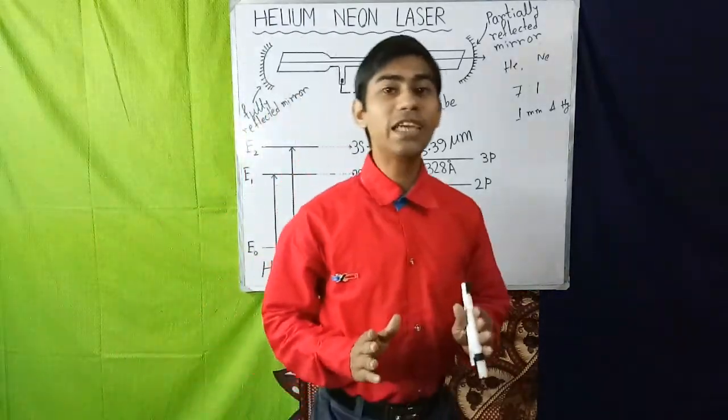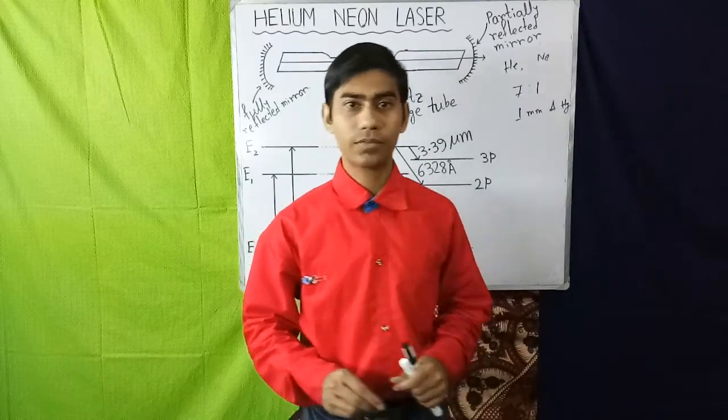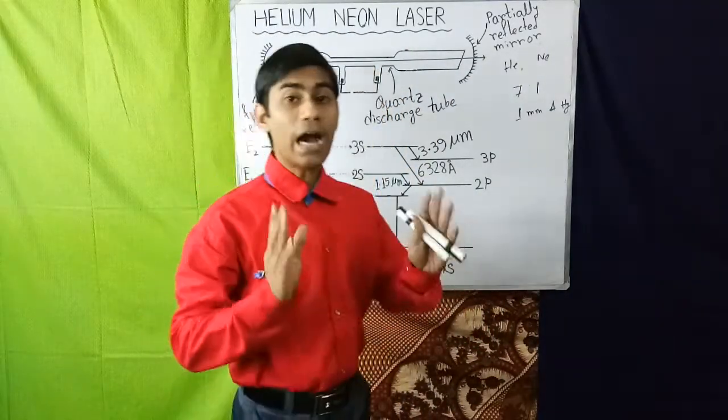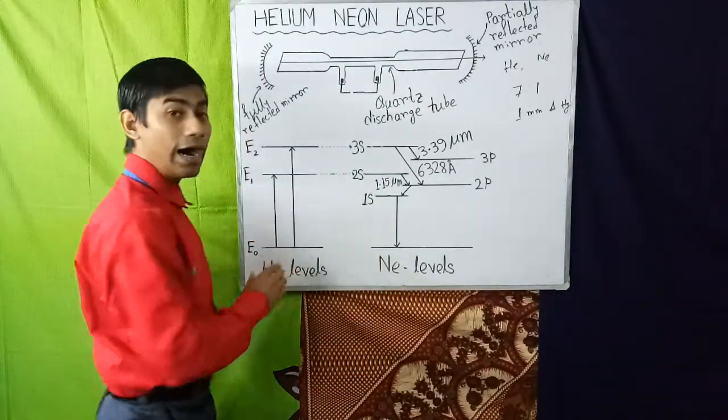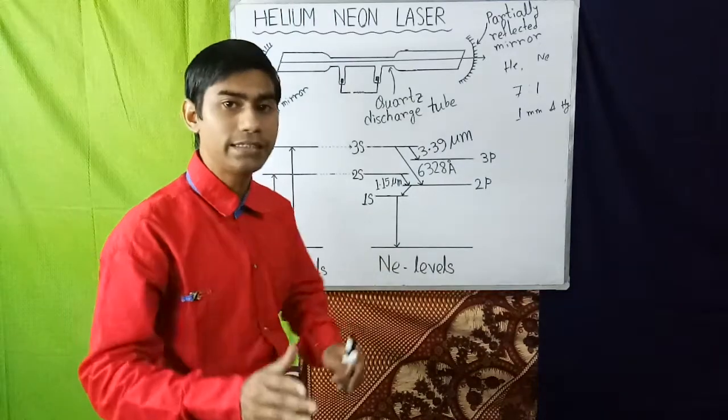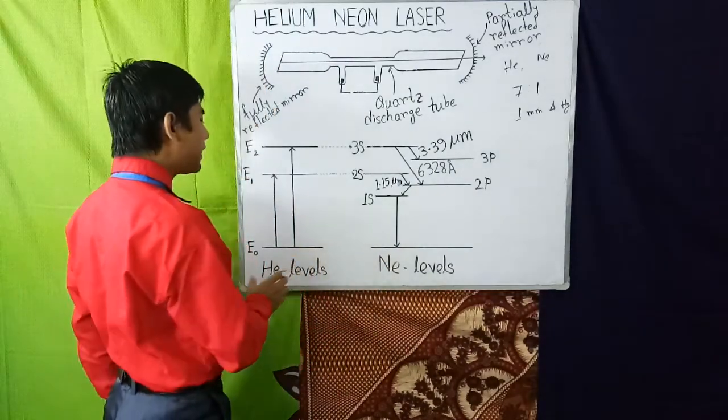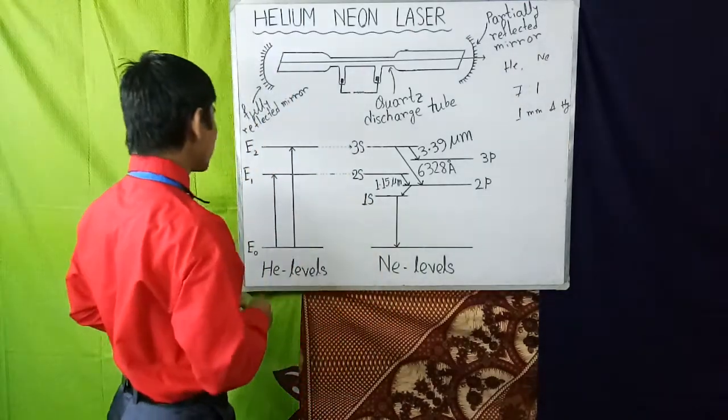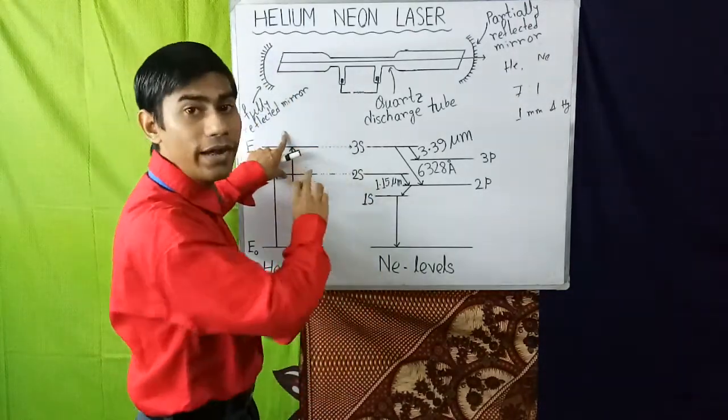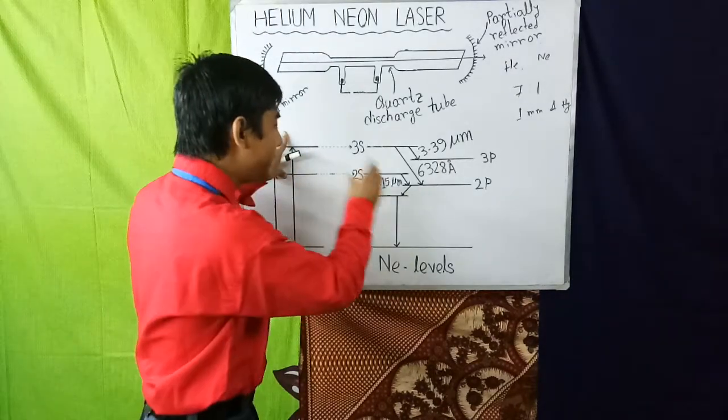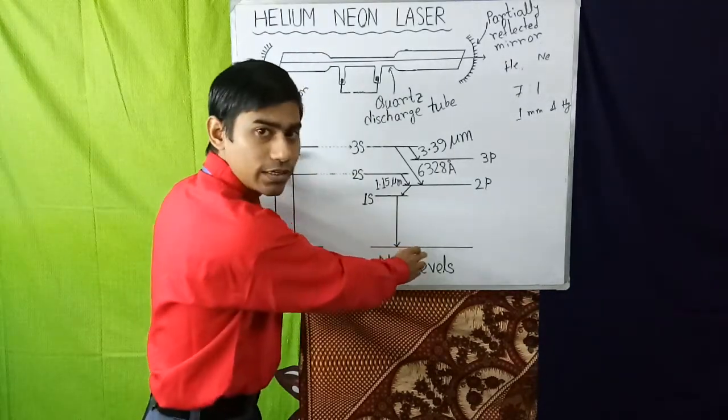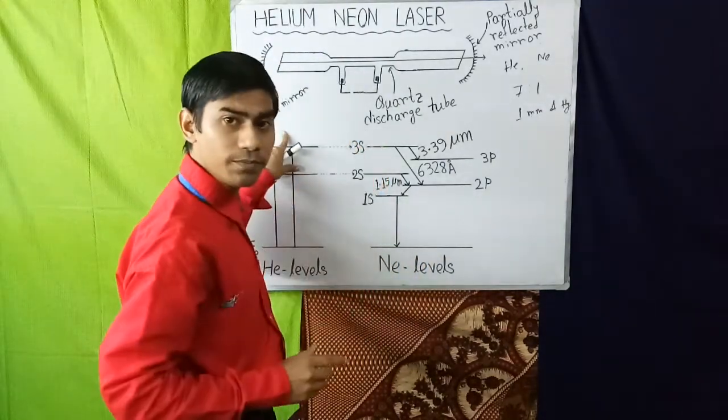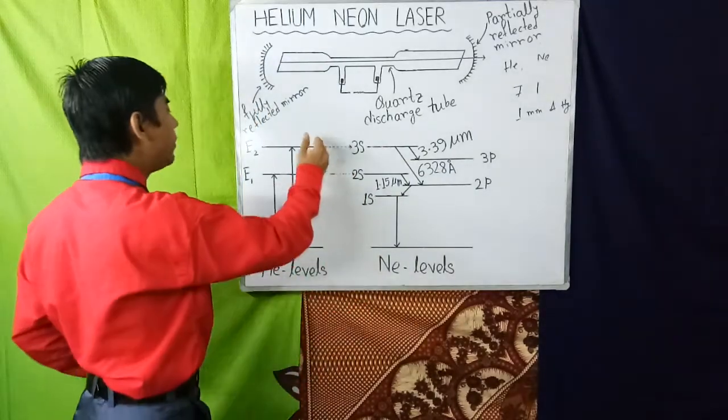Now due to the electric discharge in the laser tube, some of the helium atoms in the ground state are easily excited by absorbing energy and go to the metastable states E1 and E2. When helium atoms in the metastable states E1 and E2 collide with neon atoms in the ground state, neon atoms are easily excited and go to the 2S and 3S levels while helium atoms return to the ground state. This is a continuous process.